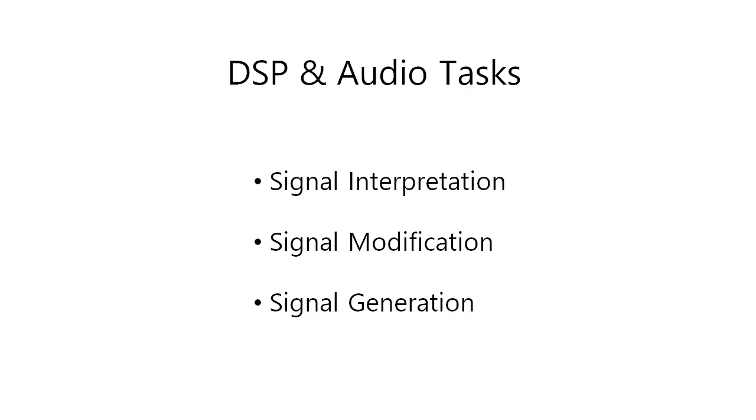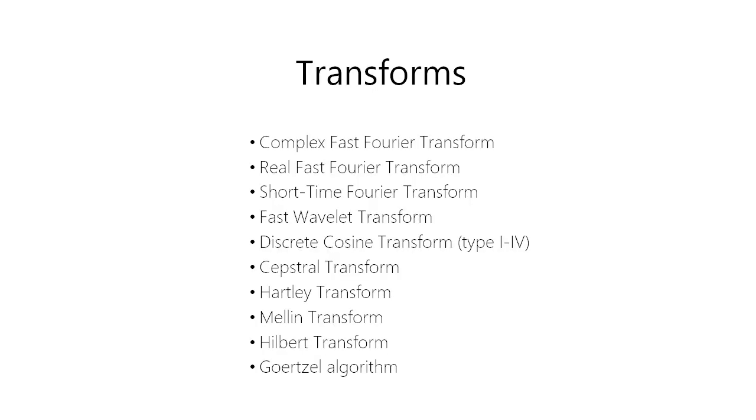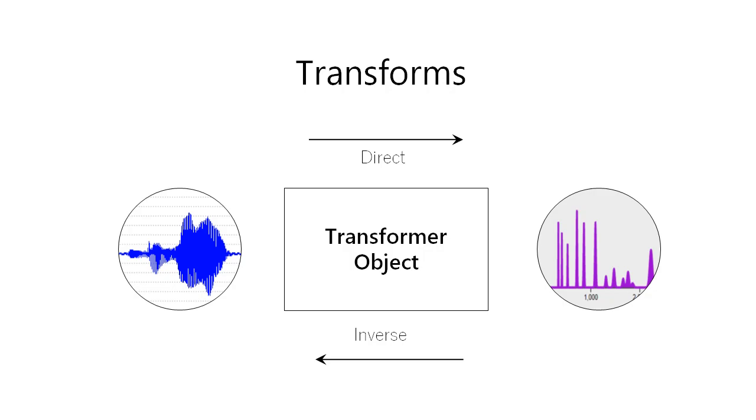As for signal interpretation tasks, first of all, in this library we have special transformer classes responsible for doing various digital transforms, such as fast Fourier transform, short-time Fourier transform including spectrograms, fast wavelet transform, discrete cosine transform, and some others. All these classes have in common two methods, direct and inverse, for direct and inverse transformations respectively.